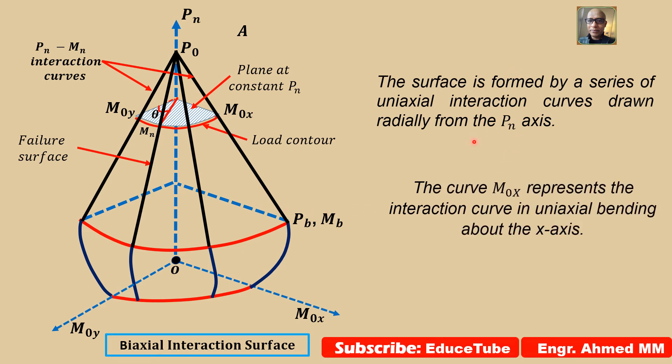This is the normal procedure of how we can get uniaxial interaction curves. The curve MOX represents the interaction curve in uniaxial bending about the x-axis. See, it is now very clear. This is curve MOX, the interaction curve about the x-axis.